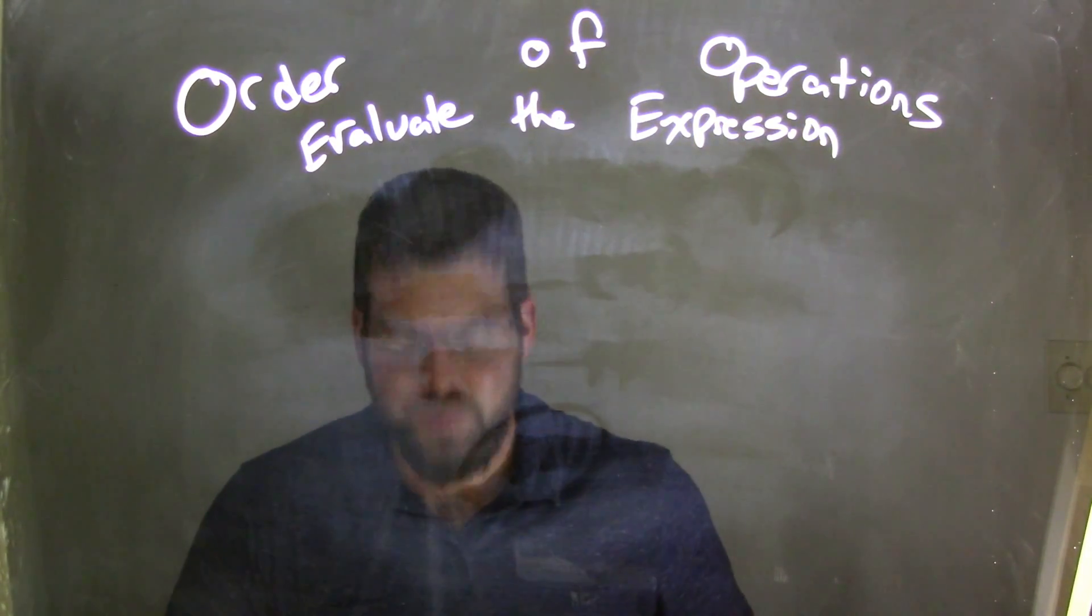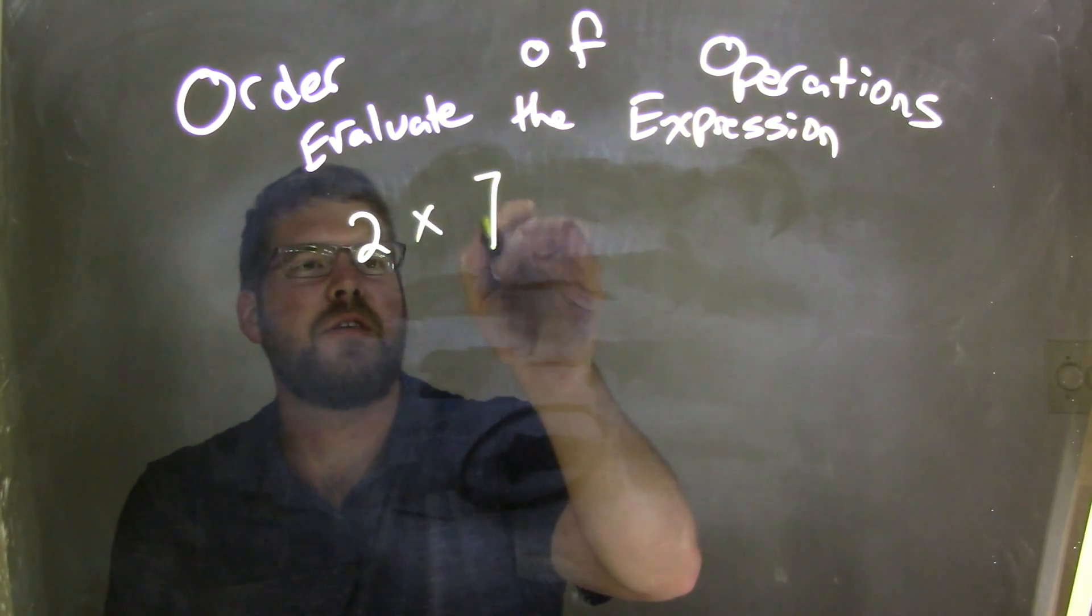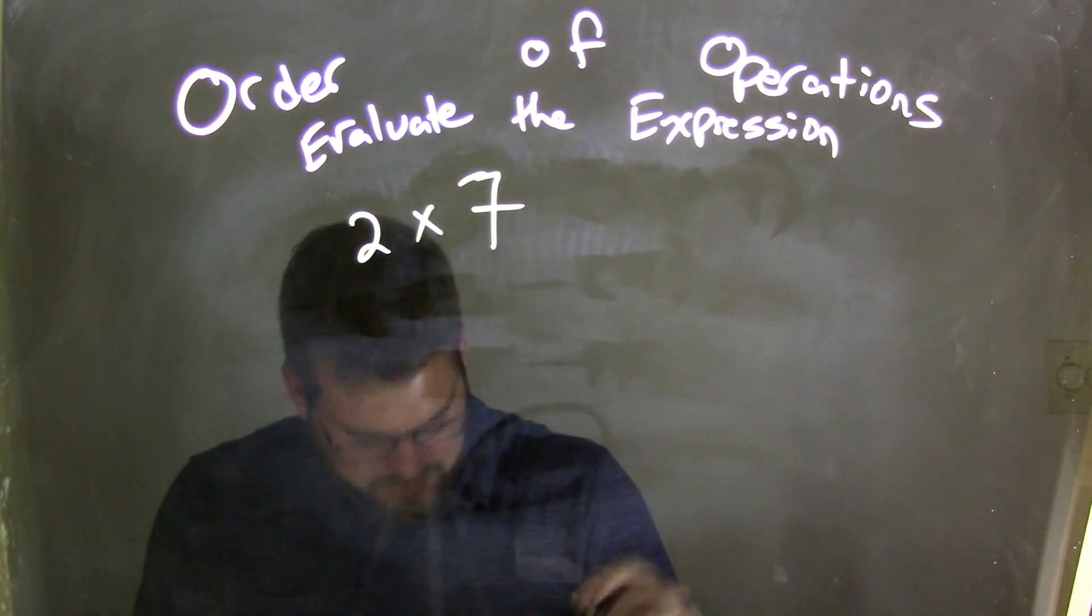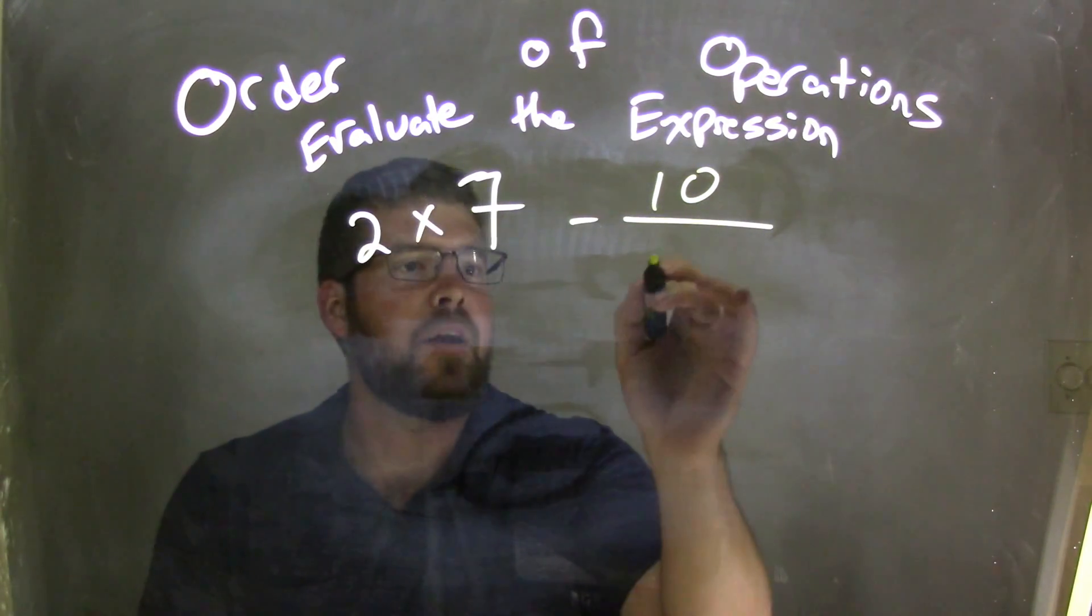We're going to evaluate this expression. So if I was given this expression 2 times 7, it's a big 7, minus 10 over 9 minus 4.